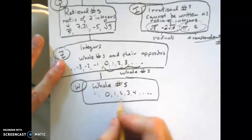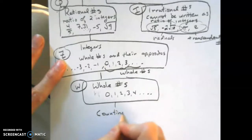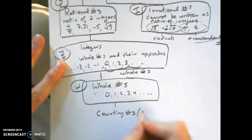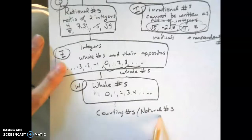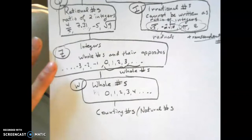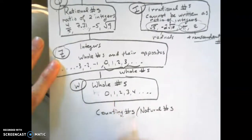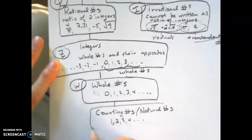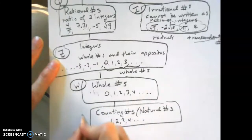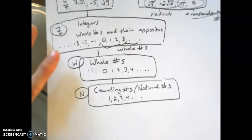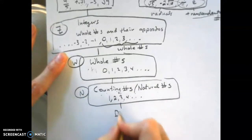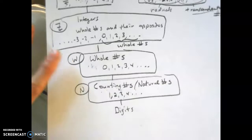A subset of whole numbers is the counting numbers, also called natural numbers — the two terms mean the same thing. Counting numbers is more intuitive: when you start counting things, you count 1, 2, 3 — you start with 1, not 0. So counting numbers are the positive integers. We use N for natural or counting numbers. A further subset is just the digits, which are the integers 0 through 9.